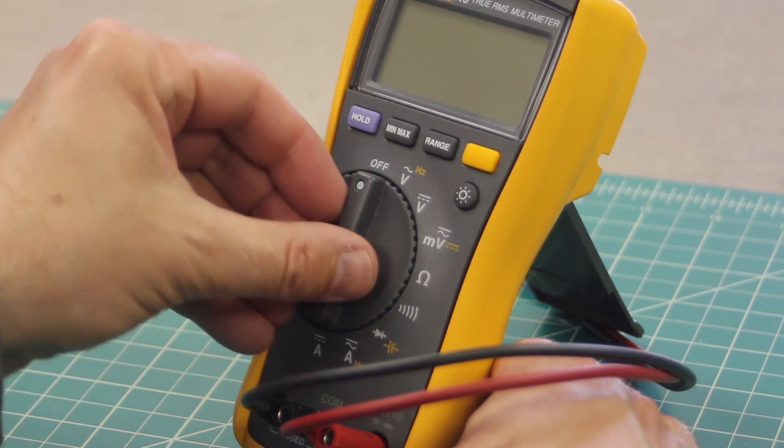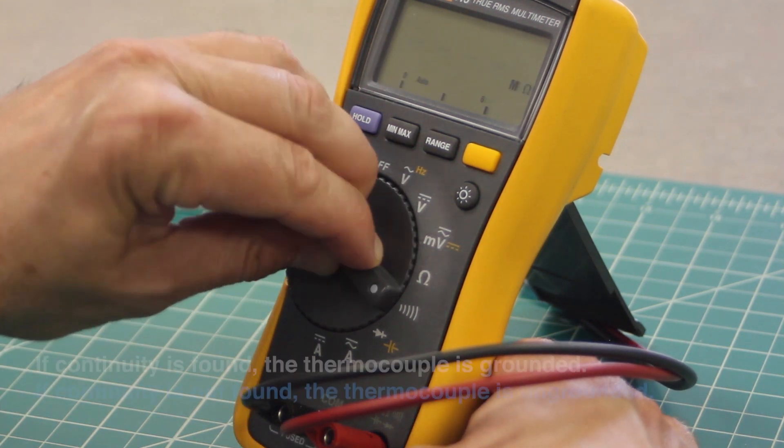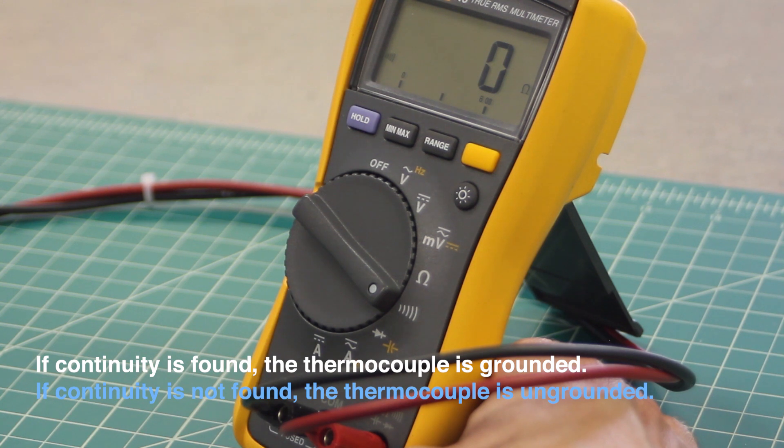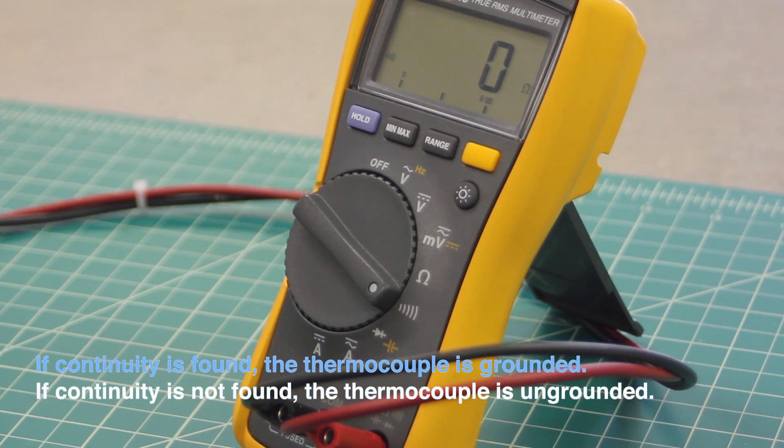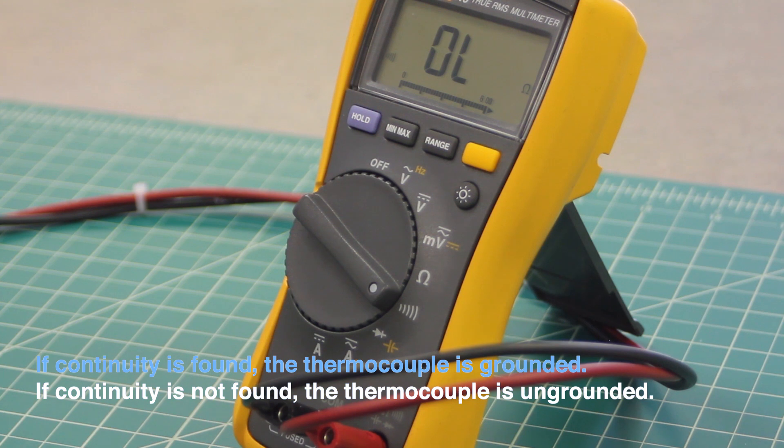Set the multimeter to measure continuity. If continuity is found, this indicates that the thermocouple is grounded. If continuity is not found, this indicates that the thermocouple is ungrounded.